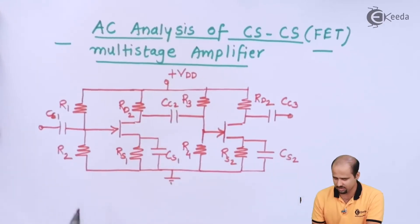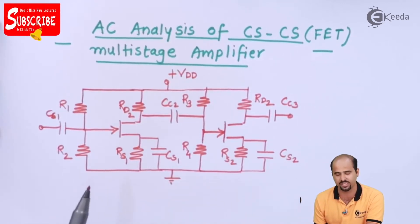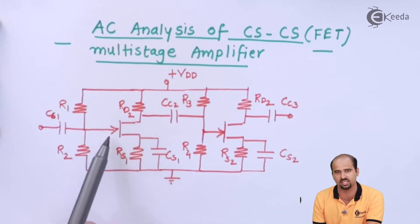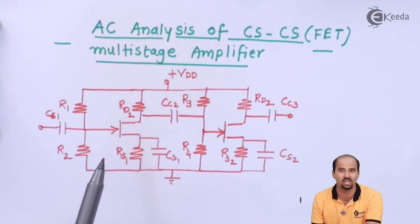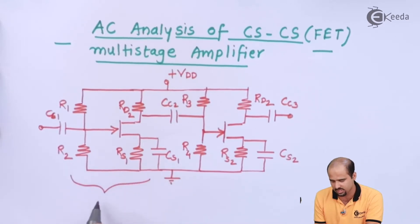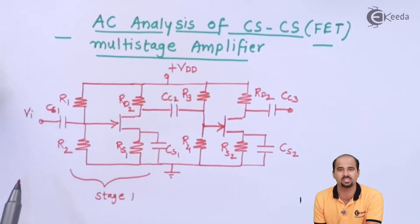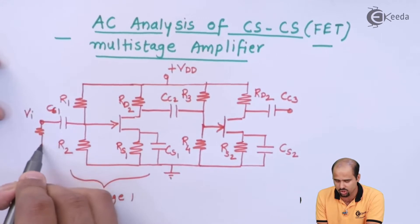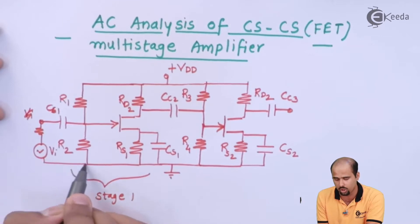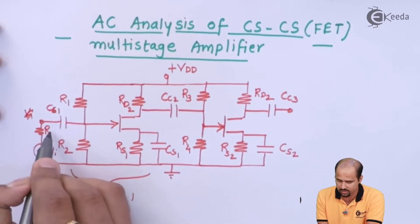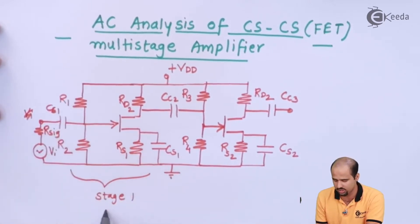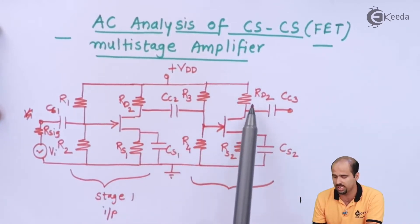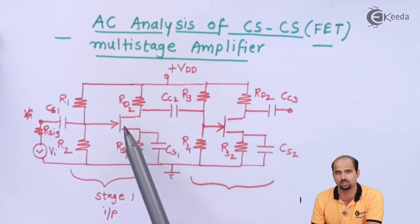We have this particular circuit. In this circuit we have the first stage which comprises of R1, R2, RD2, RS2, D for drain, S for source, and this middle one is an N-channel field effect transistor — more specifically an N-channel junction field effect transistor. This is the first stage, which is the input stage. Input is given at the gate side of the field effect transistor, where we will also have an input source resistance.